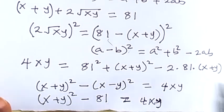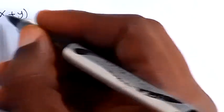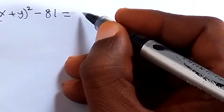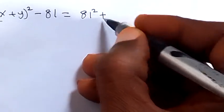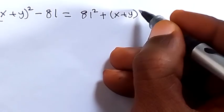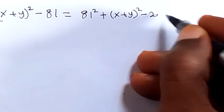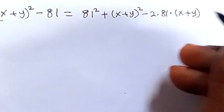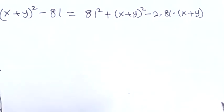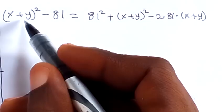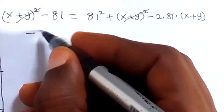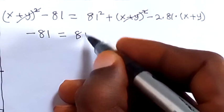Writing the equation again: (x + y)² minus 81 equals 81² plus (x + y)² minus 2 times 81 times (x + y). We have (x + y)² on both sides, so they cancel each other. And we have minus 81 left on the left equals 81 squared on the right.